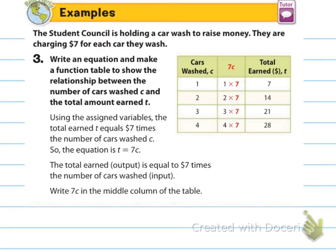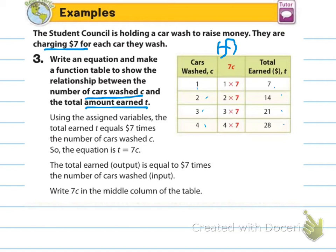Example three: the student council is holding a car wash to raise money, charging $7 for each car they wash. Write an equation and make a function table to show the relationship between cars washed, C, and the total amount earned, T. The equation is T equals 7C. In the function table: wash one car, earn $7; two cars, $14; three cars, $21; four cars, $28 — each time multiplying C by 7.